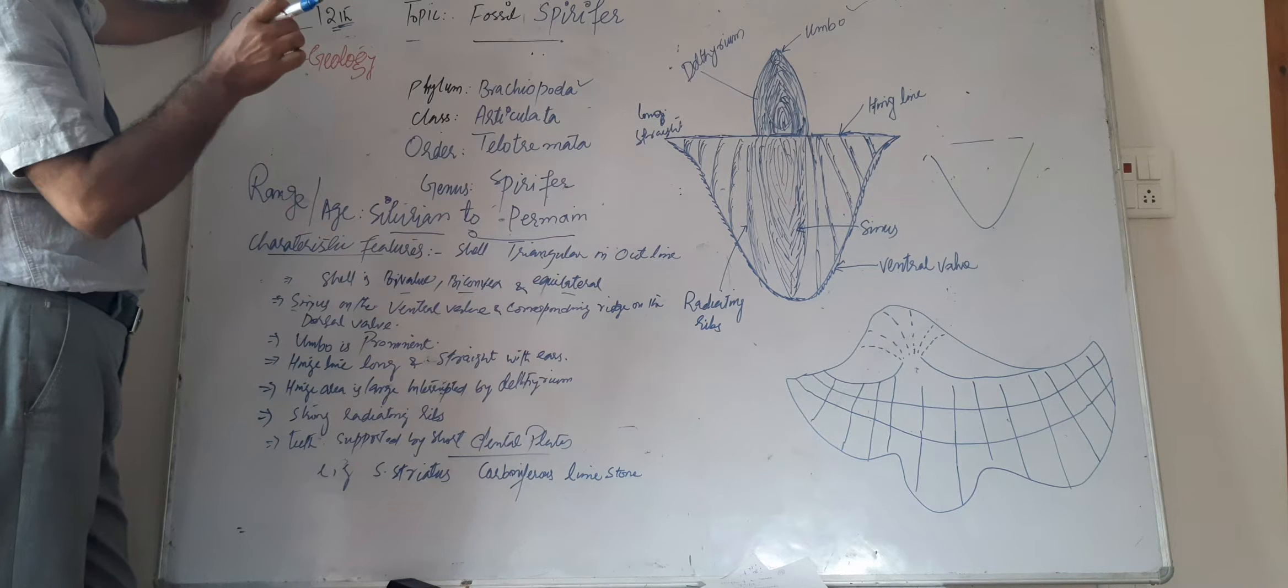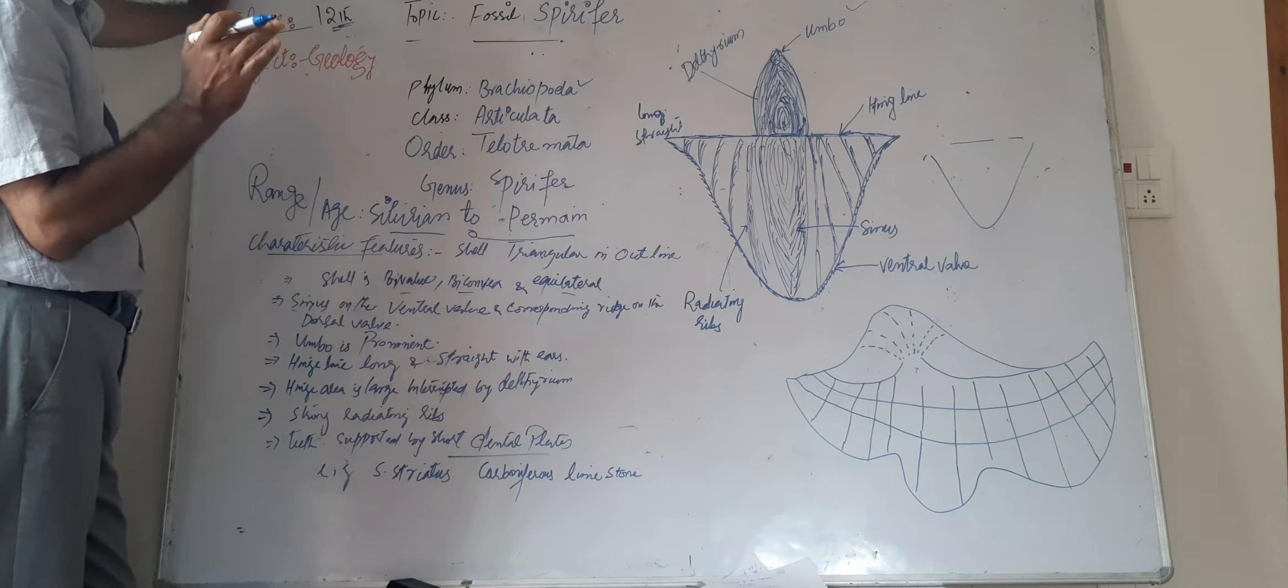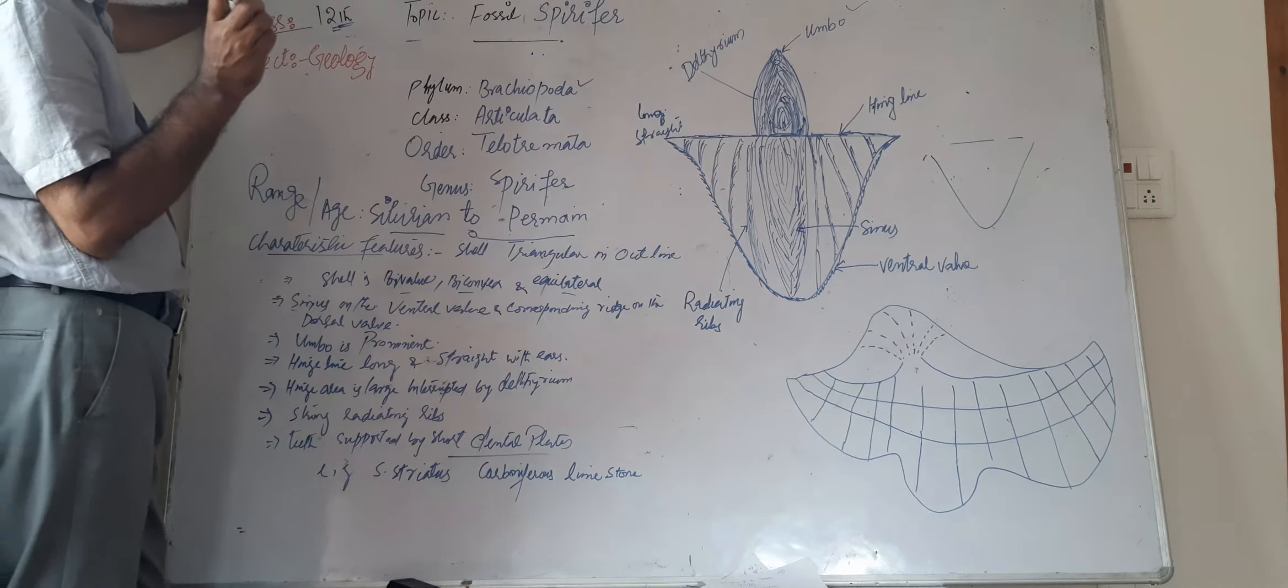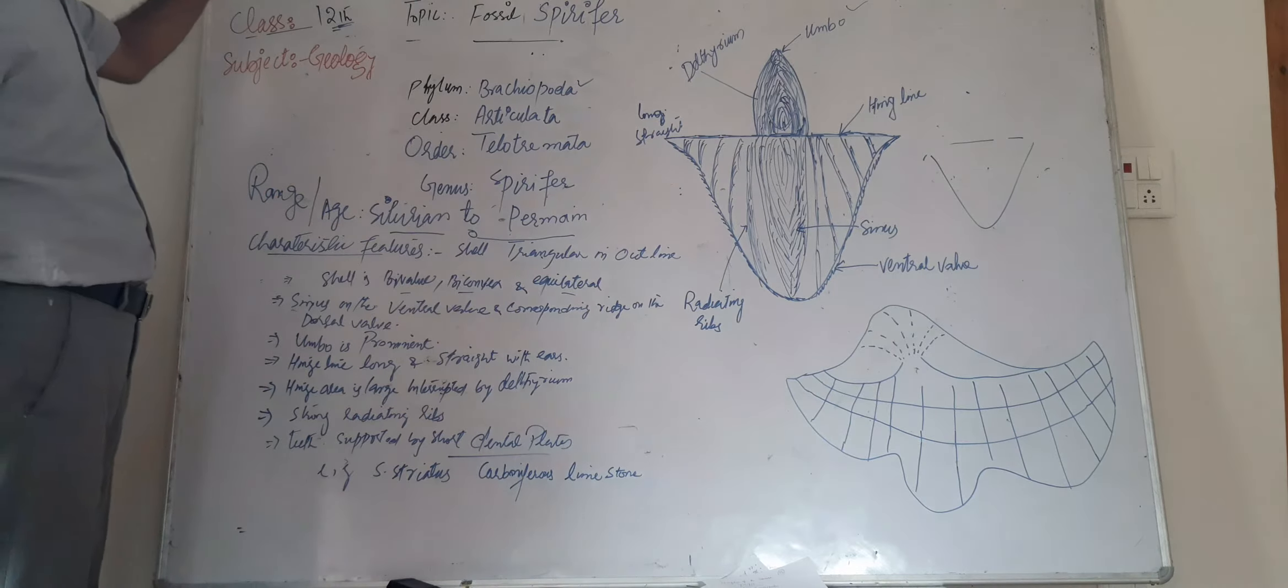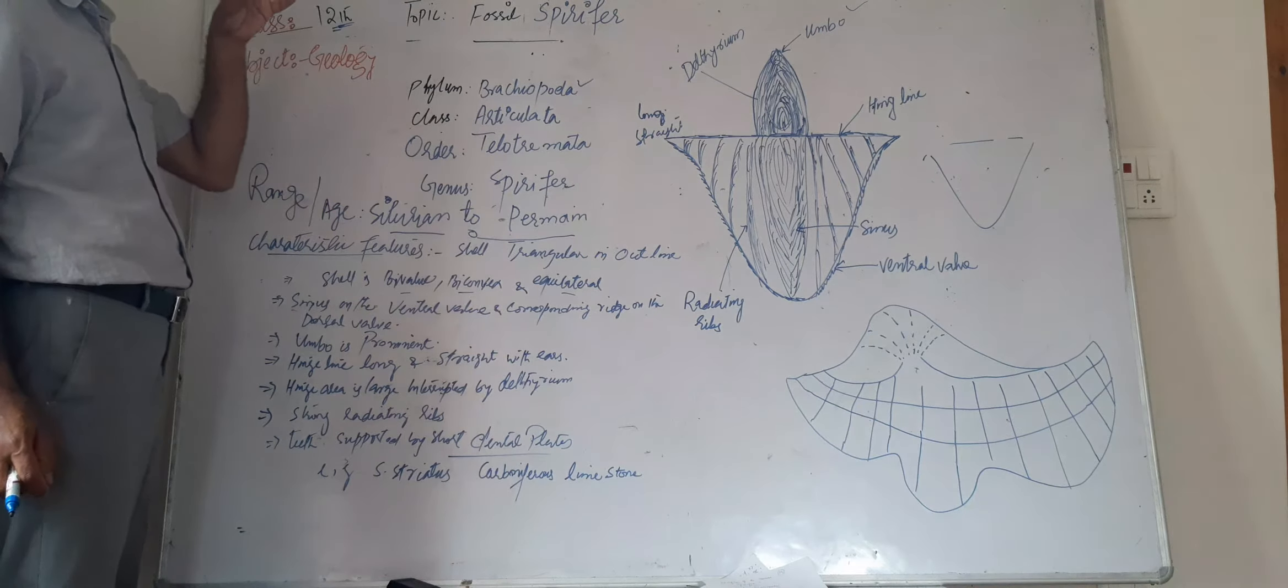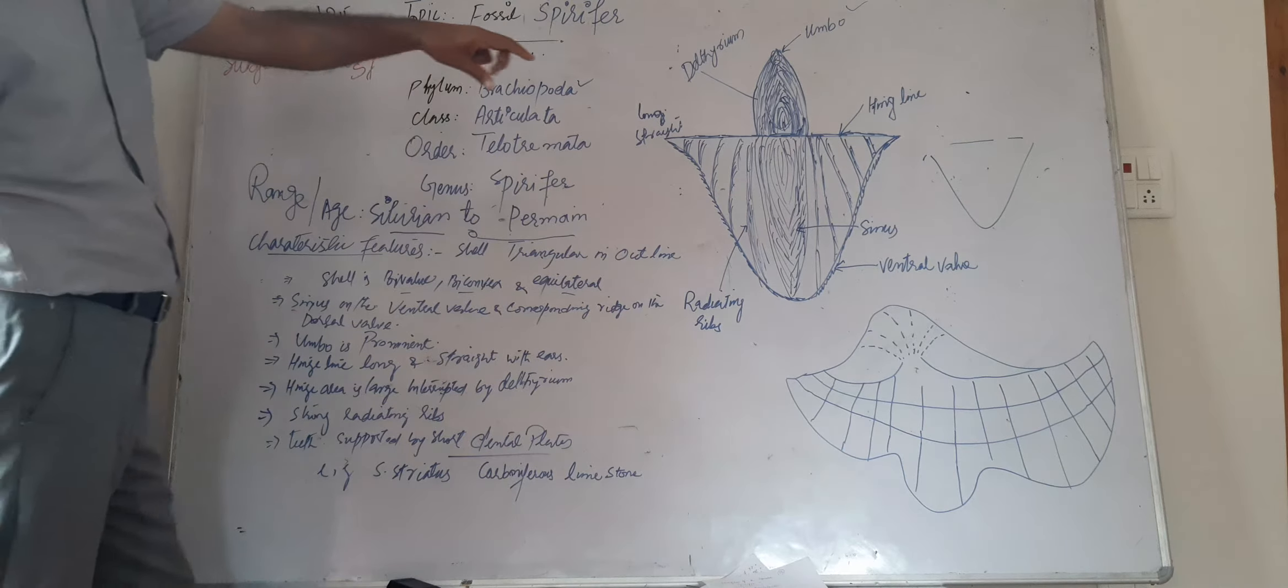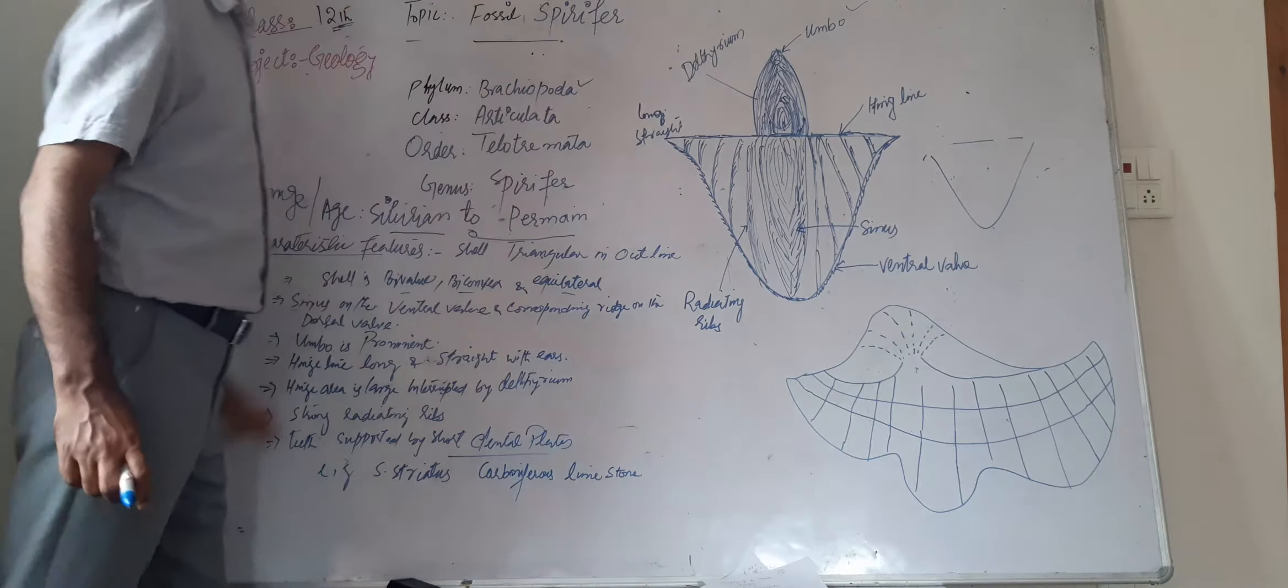Where there are the pallets - if there is one pallet, then it is known as deltarium; if there are two, then these are known as deltarium; if more than two. So there is the deltarium also which is within the hinge area. Hinge area is between the hinge line and the umbo. That means in other words we can say there is a large hinge area interrupted by deltarium.